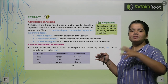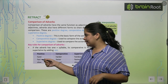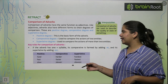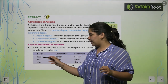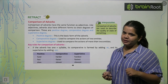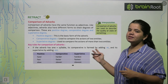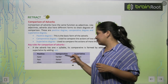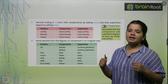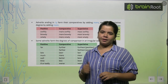Now let's see the key rules. For one-syllable adverbs like 'hard' and 'fast,' we add -er for comparative and -est for superlative, just like adjectives. So: fast, faster, fastest; slow, slower, slowest. Be careful with spellings — that is the main thing.